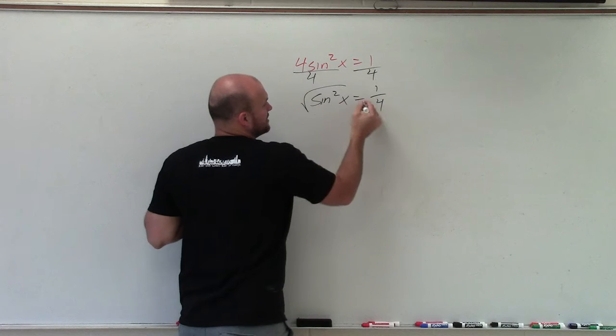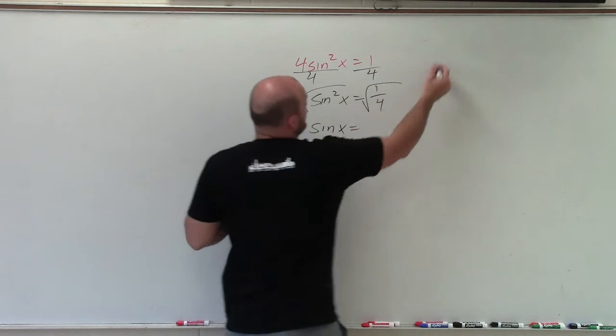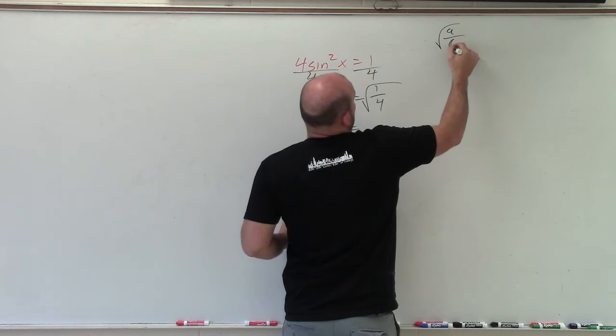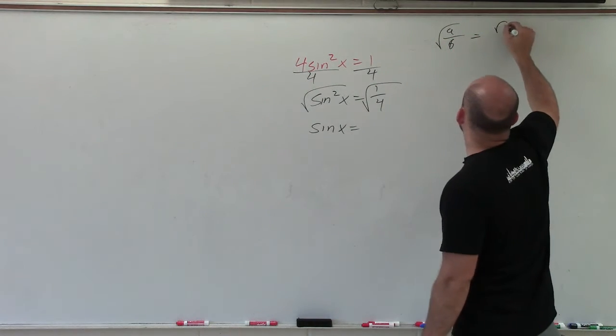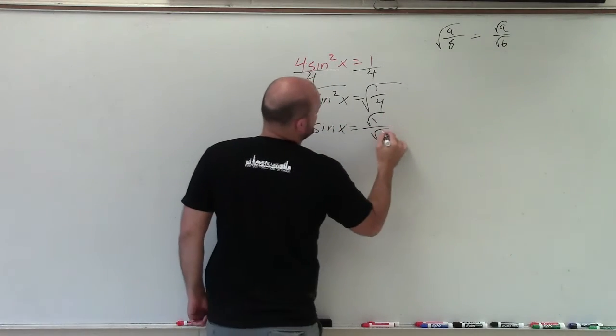Now, I need to undo the square root. So I'll take the square root of both sides. So therefore, I have sine of x equals. Now, remember, the square root of any rational term can be written as the square root of a over the square root of b. So this is equal to the square root of 1 over the square root of 4.